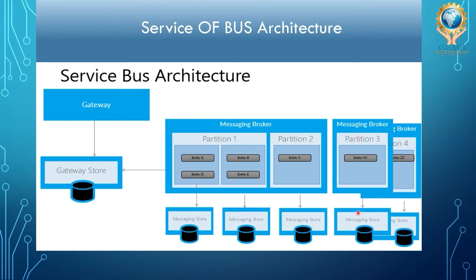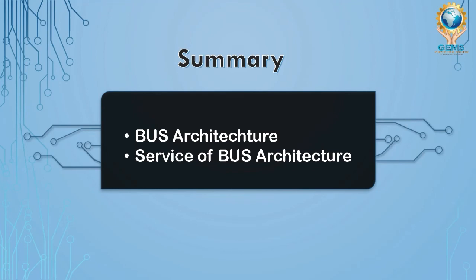The bus communication will never access partition 1 or 2 because the data only has the address of partition 3. If the data has the address of partition 4, it will access partition 4 and not partitions 1, 2, or 3. The rest will be covered in the next video. In this video we have seen about the bus architecture and the service bus architecture — how the bus inside the computer is functioning and how it is designed. Thank you.